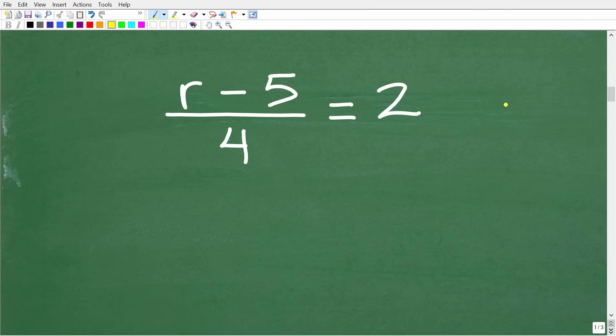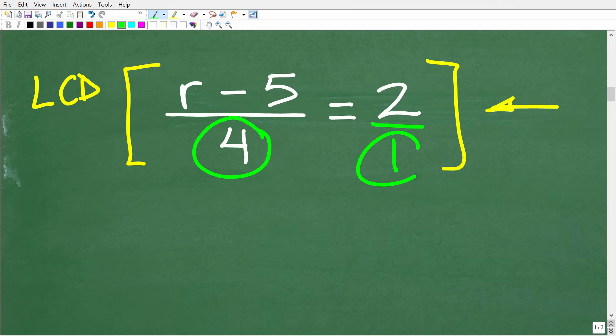All right, now another way to solve this equation, which is just as good as the proportion method, is to clear the fractions in the equation. And to do that, we need to multiply the entire equation by the LCD, or the lowest common denominator. So we have to look at all the denominators in the equation to figure out the LCD. So here we have 4, and over here we have a 2, but really we have a 2 over 1. So we have the denominators of 4 and 1.